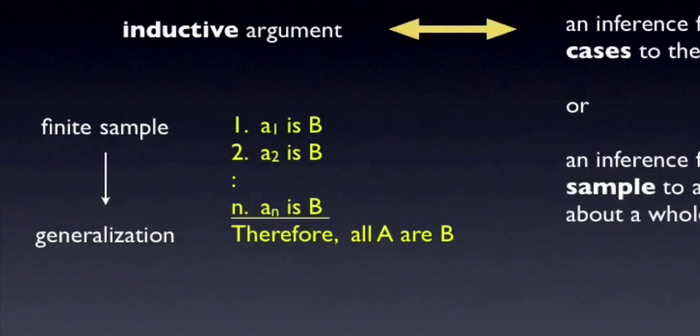Here's the prototype argument form that illustrates this notion of inductive inference. You note that some individual of a certain kind, A1, has a property B. An example would be this swan is white. Then you note that some other individual of the same kind, A2, has the same property. This other swan is white. And you keep doing this for all the individuals available to you. So you've observed N swans, and all of them are white. From here, the inductive move is to say that all swans everywhere are white, even the swans that you haven't observed and will never observe.